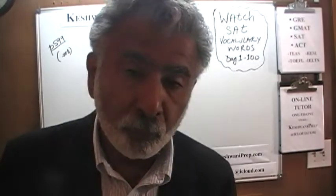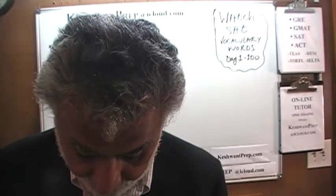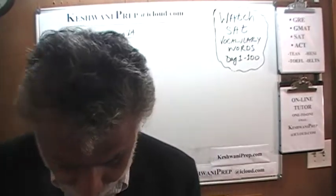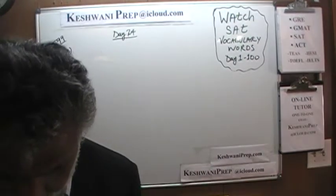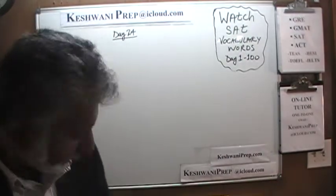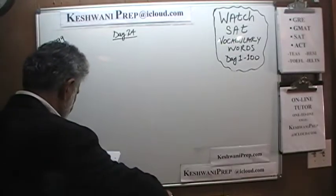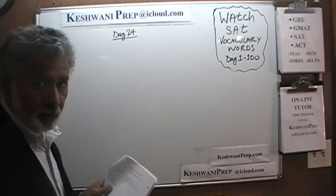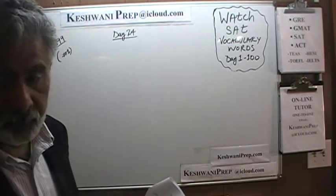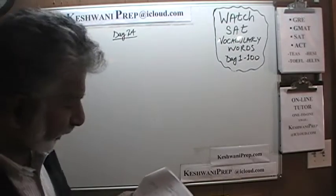Today we are on page number 599, picking up from where we left off last time. Make sure the book is always in front of you. Turn to page 559, section number four, problem number one. As you already know, the first few problems are going to be quite straightforward.